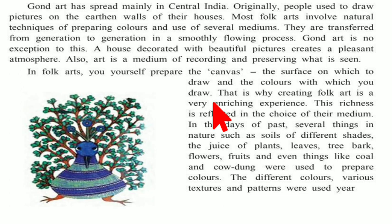In the days of the past, several things from nature were used — such as soil in different shades, and the juice of plants, leaves, tree bark, and flowers. Even coal and cow dung were used to prepare colors. The soil comes in black, brown, and red varieties. How fascinating it is that color was prepared from all these natural materials!